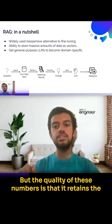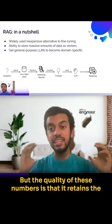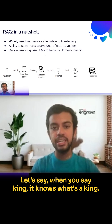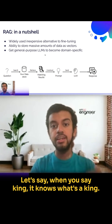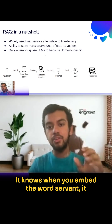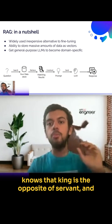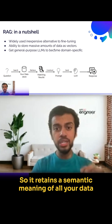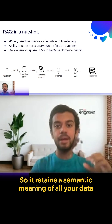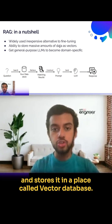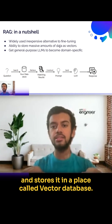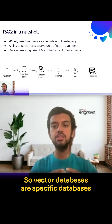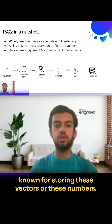The quality of these numbers is that they retain the semantic meaning of the data. For example, when you say 'king,' it knows what a king is, and when you embed the word 'servant,' it knows that king is the opposite of servant. That's how it's trained. It retains semantic meaning and stores it in a vector database — a specific database designed for storing these vectors.